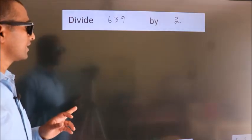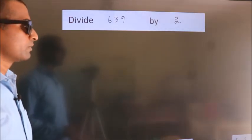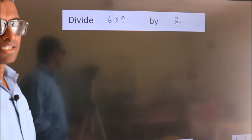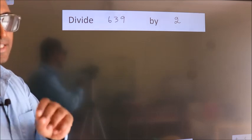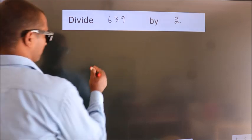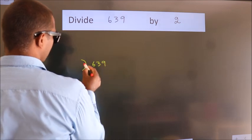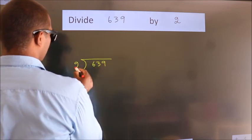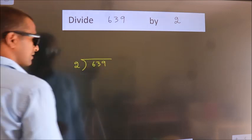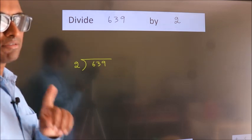Divide 639 by 2. To do this division, we should frame it in this way. 639 here, 2 here. This is your step 1.